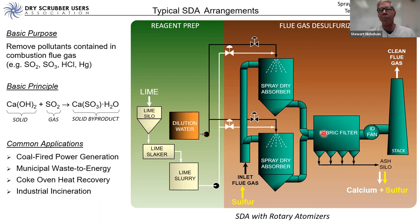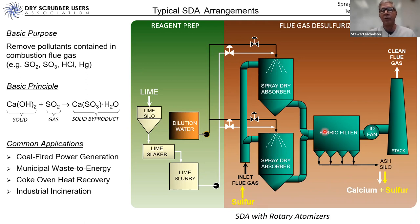This is called a single-pass system — the lime goes in once, reacts once, and is captured in the fabric filter. The solid byproducts from reaction with SO2 and other acid gas constituents are captured in the fabric filter and then taken out for waste disposal. Sulfur dioxide and sulfur trioxide enter as gases, react with calcium hydroxide producing a solid byproduct, which is then captured and disposed of.